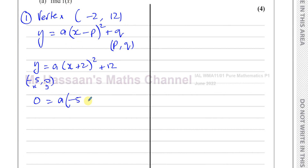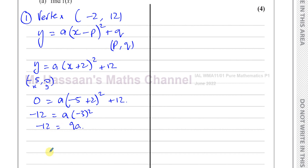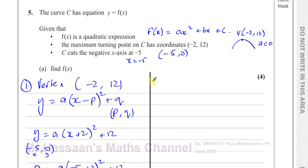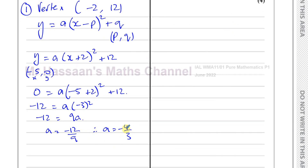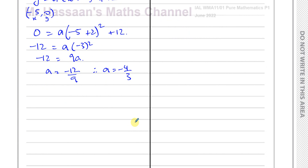So I have A times negative 5 plus 2 squared plus 12. The only thing we don't know is A. Subtracting 12 from both sides: negative 5 plus 2 is negative 3, all squared. So I've got negative 12 equals 9A, therefore A equals negative 12 over 9, which simplifies to negative 4 over 3. We did determine that A was definitely negative — that's confirmed.